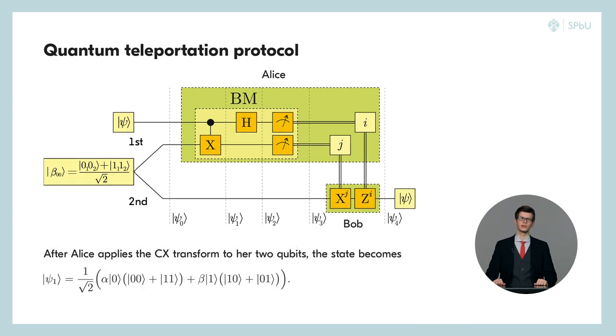To implement the teleportation protocol, Alice has to perform a measurement in the Bell basis on her qubits. In order to do this she should perform the CX transform in which the psi qubit acts as a control qubit and the first qubit of the Bell pair acts as a controllable one.